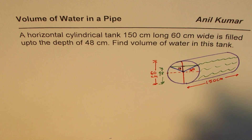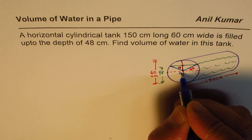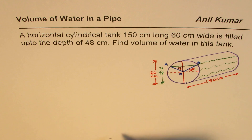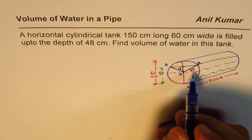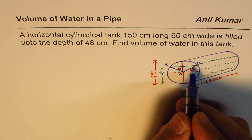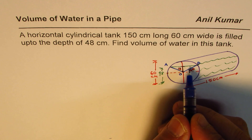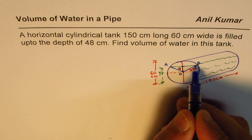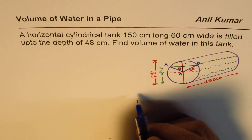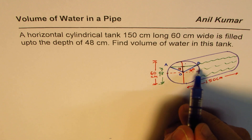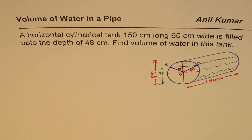Let me give names to all these points. This is O, this is A, and that is B. We see triangle OAB and we need to find the area of this triangle. Once we find the area of the triangle, we take it away from the sector area OAB to find the area of the segment. Then from the area of the circle, we take away the segment area to find the water cross-section. That is the approach.